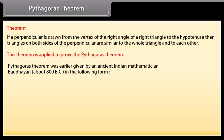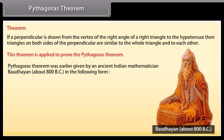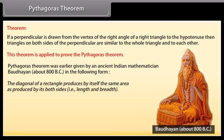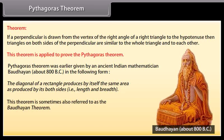The Pythagoras theorem was earlier given by an ancient Indian mathematician Baudhayana about 800 BC in the following form: the diagonal of a rectangle produces by itself the same area as produced by its both sides, that is, length and breadth. This theorem is sometimes also referred to as the Baudhayana theorem.